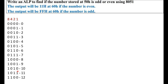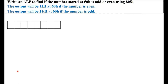Let us consider an 8-bit number stored at memory location 50H. A number has an MSB and an LSB. Our interest is the least significant bit. If this least significant bit is 1, it indicates the given number is odd, and if this least significant bit is 0, it indicates that the given number is an even number.